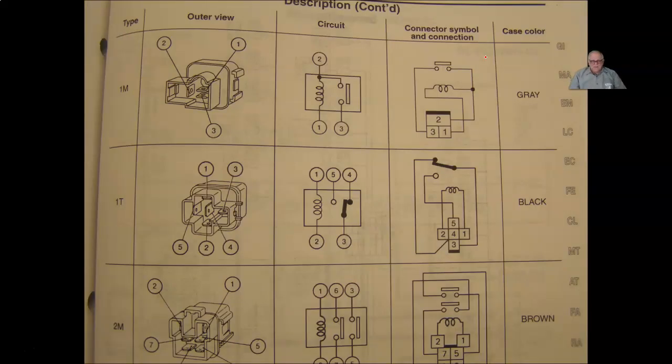Nissan, again, unique in the industry, they make all their own relays. They have a gray relay, which is a three pin relay. It is a 1M, which is a 1 make. You can see your control side here, one to two, and then two actually goes to both the control side and the switch side.